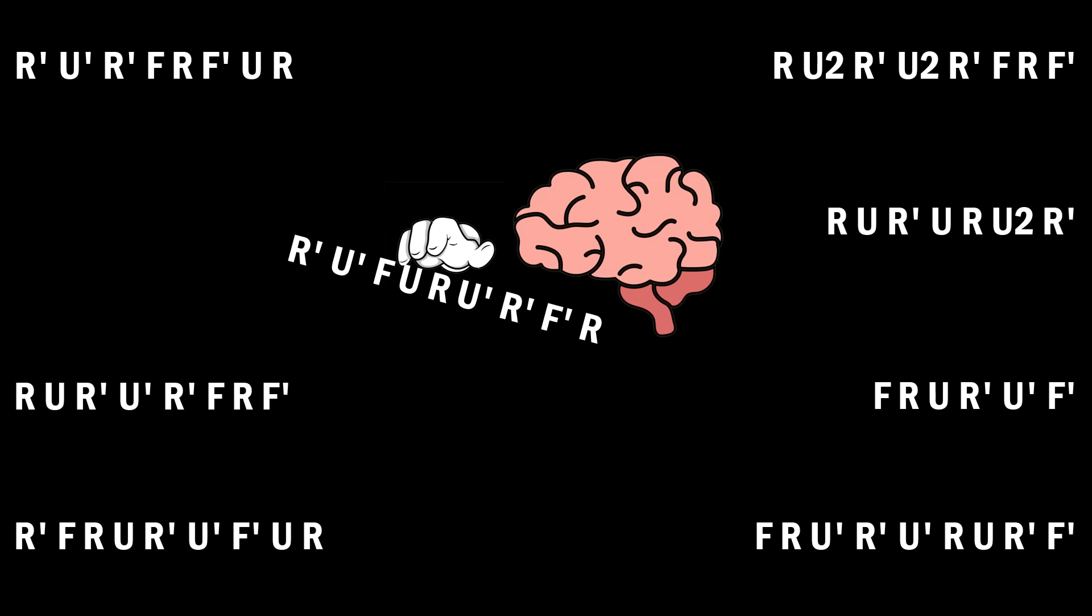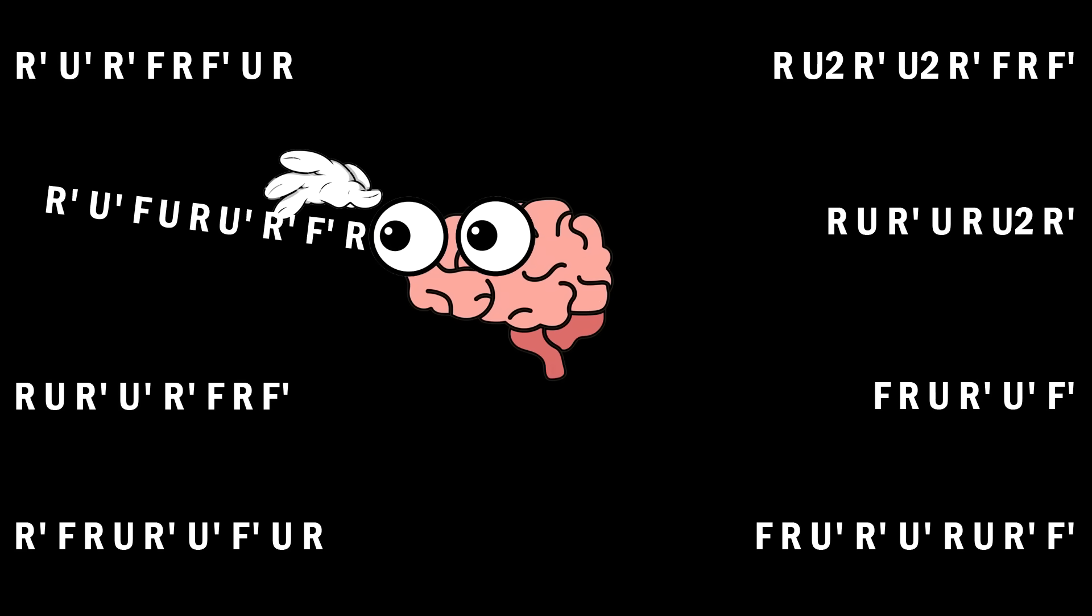Doing an algorithm over and over doesn't force you to recall it, because your brain just holds onto that information and keeps using it. You need your brain to put that away, and then come back to it later and ask your brain to look for it again.